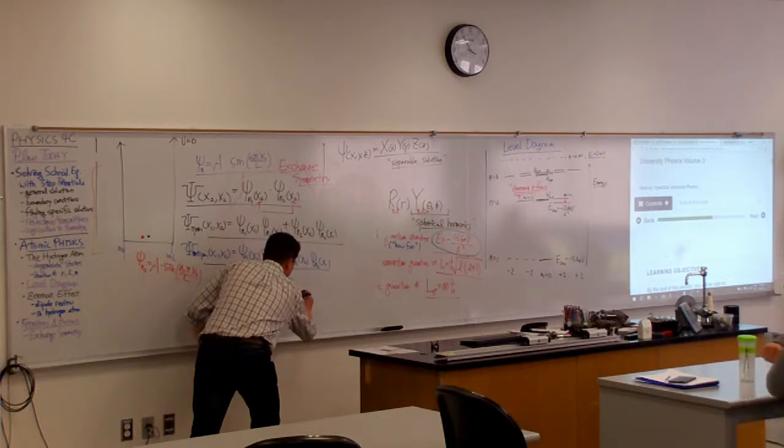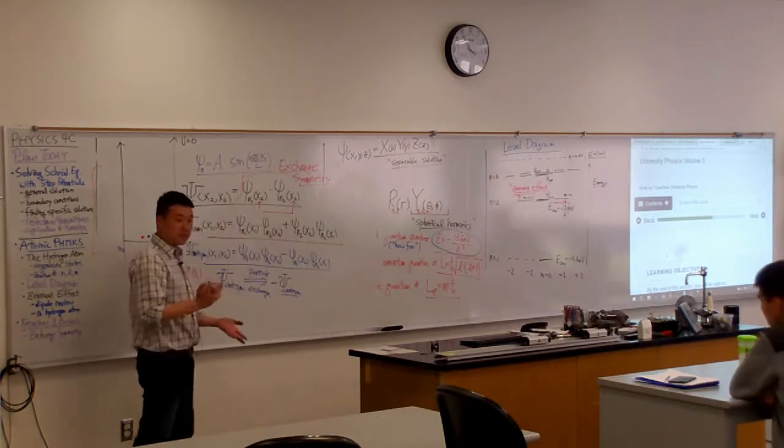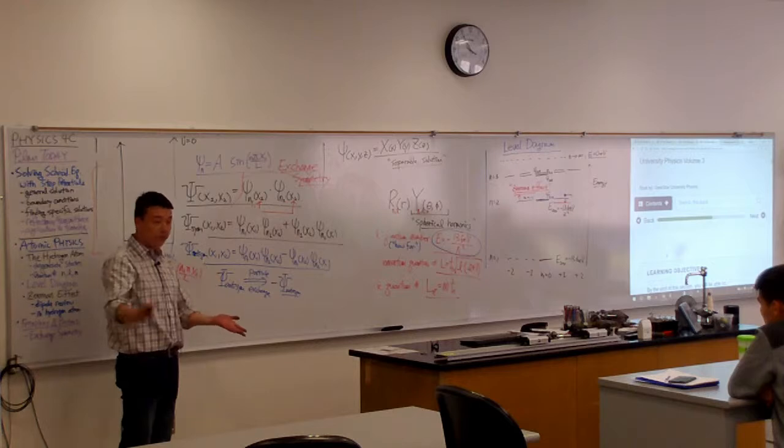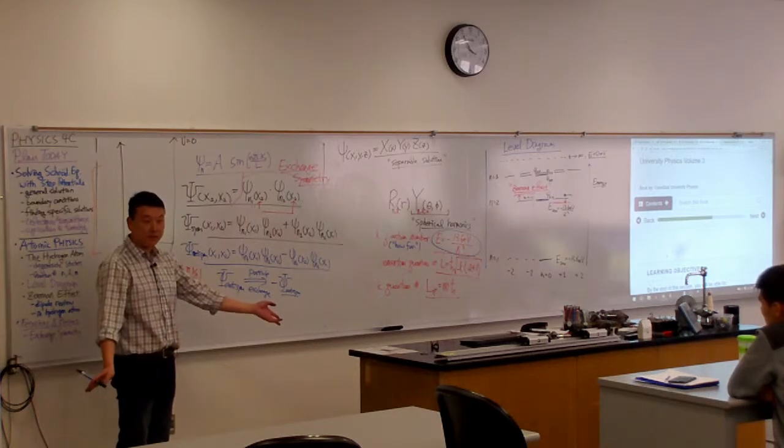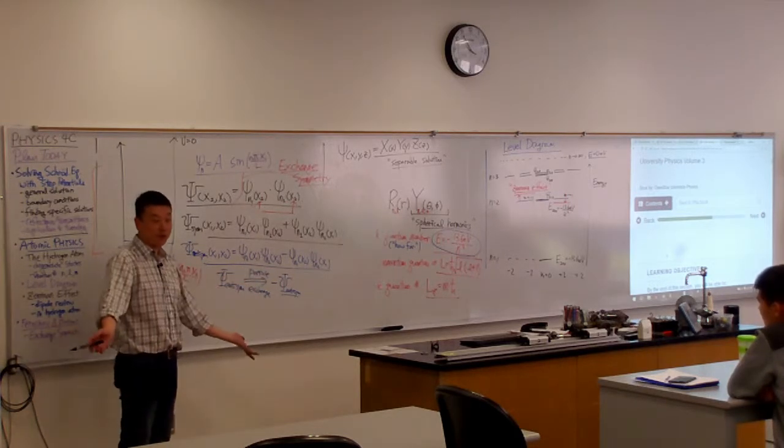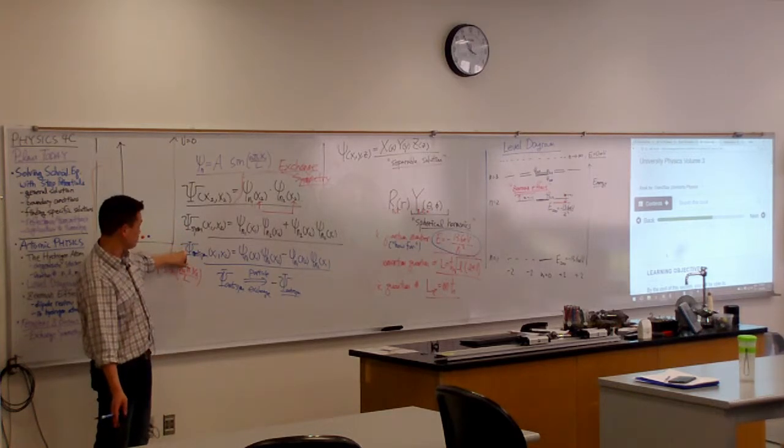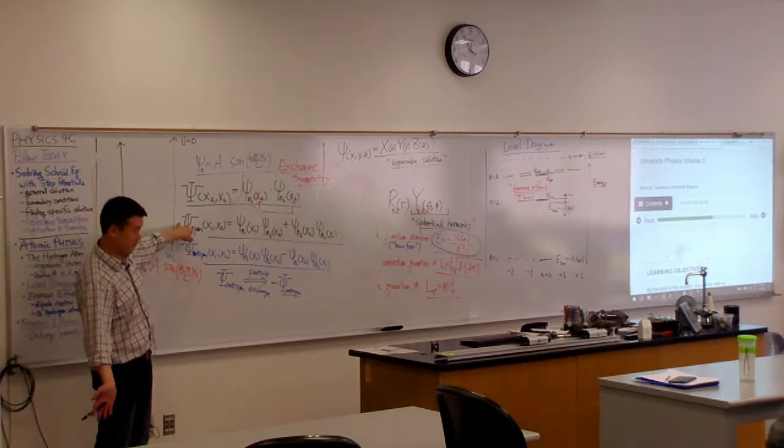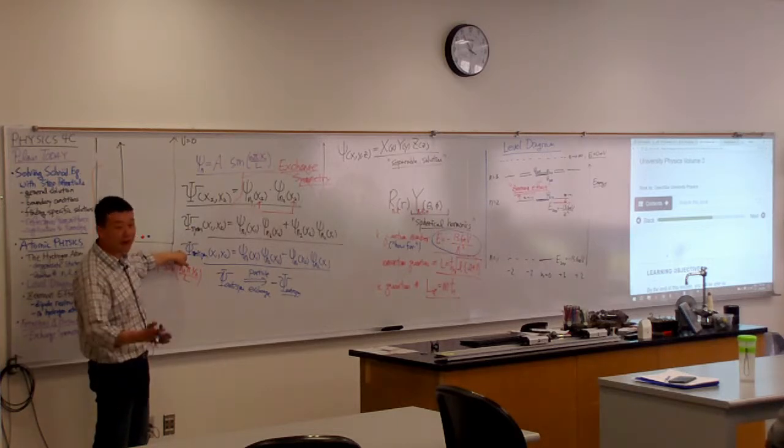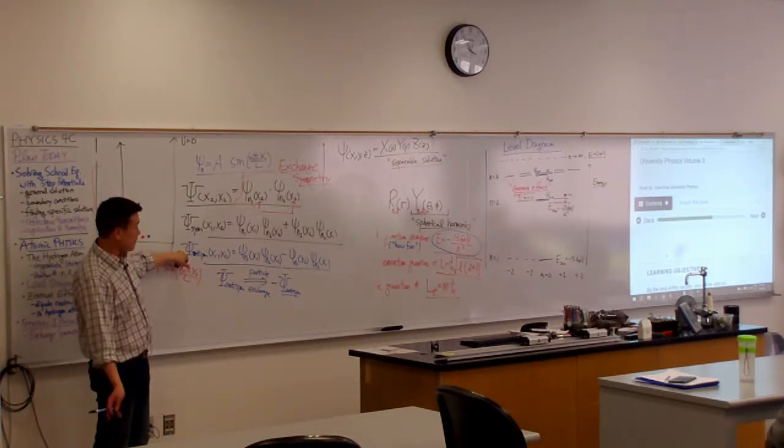So, just like an odd function is a kind of a symmetry to a function, not every function is even or odd. There's functions that are neither even or odd. This is two different kinds of symmetric wave function. Even kind of symmetric or symmetric. Odd kind of symmetric or anti-symmetric.